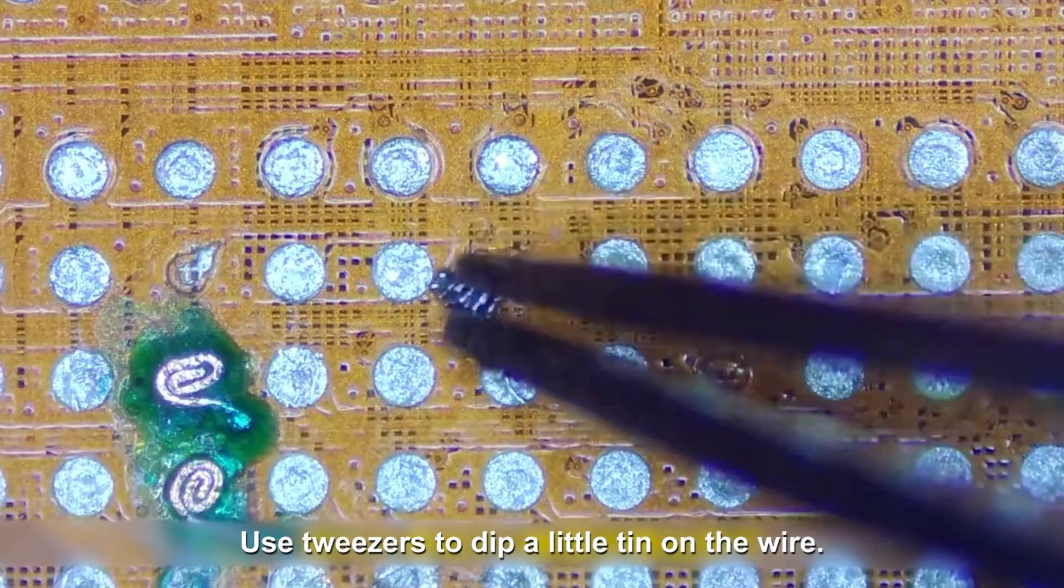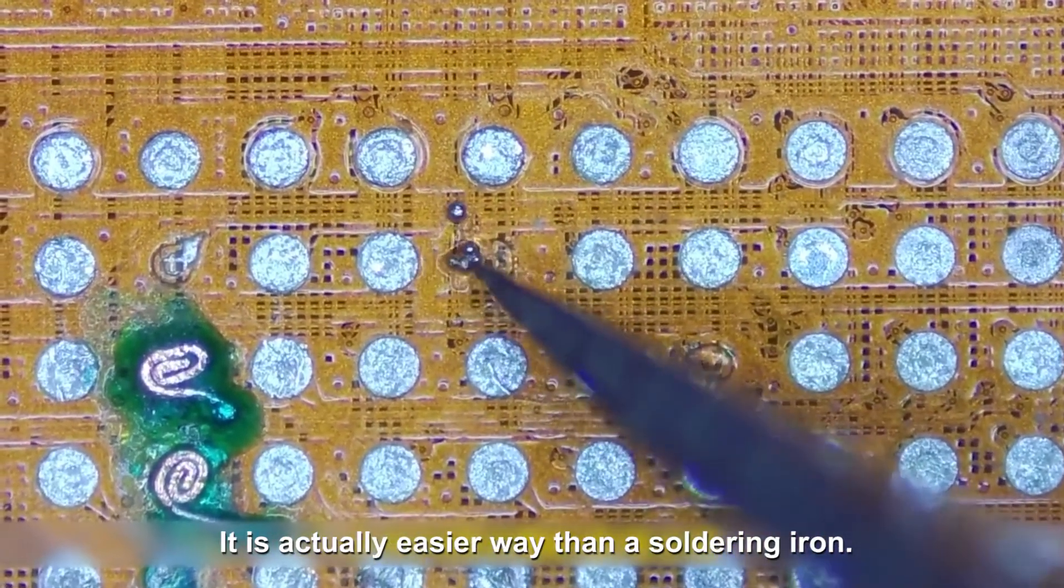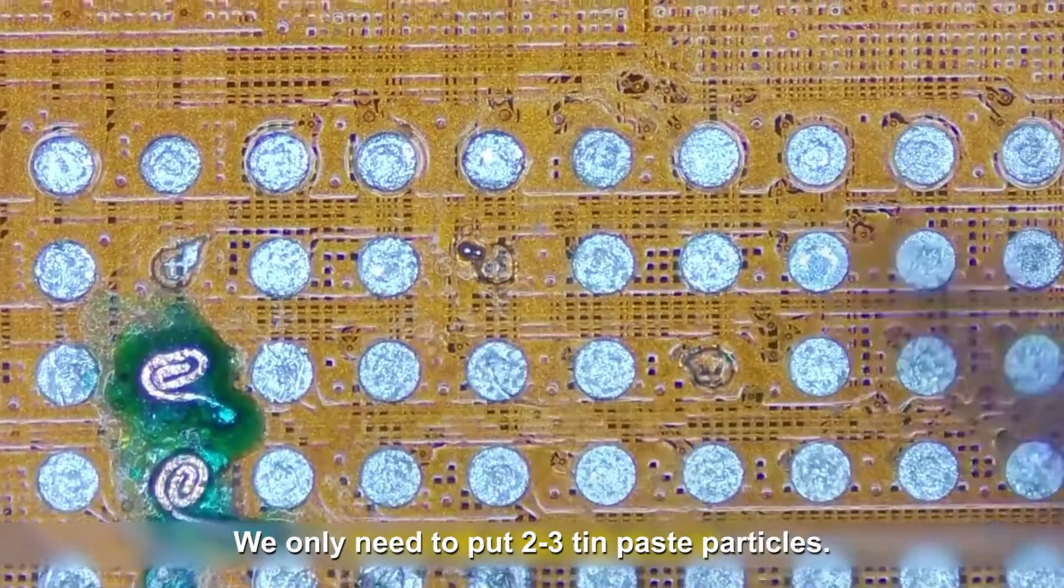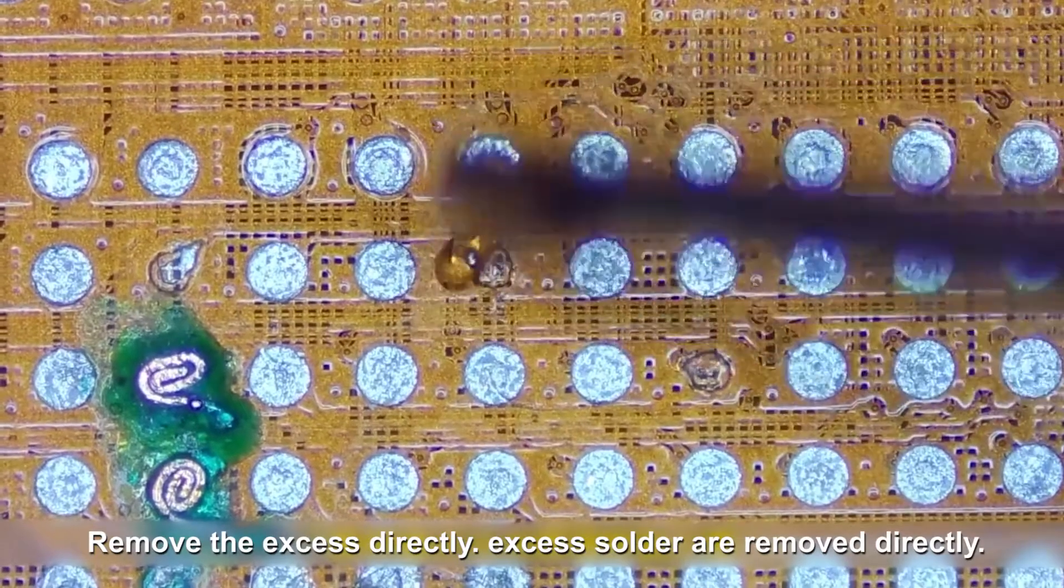Use tweezers to dip a little tin on the wire. It is actually an easier way than a soldering iron. We only need to put two to three tin paste particles. Remove the excess directly.